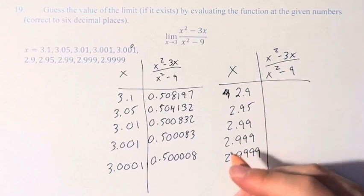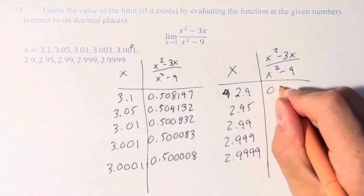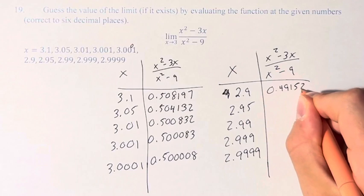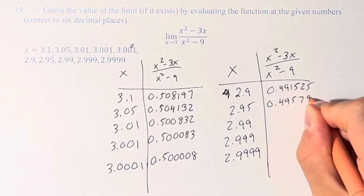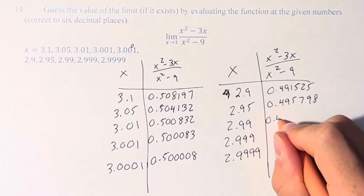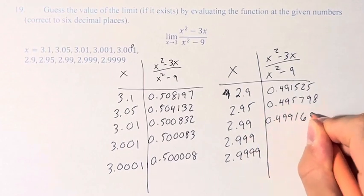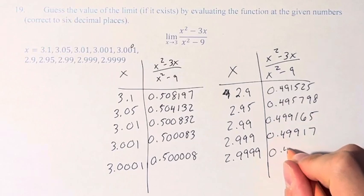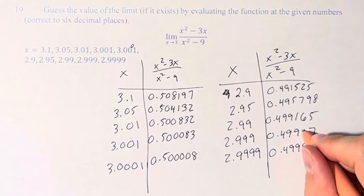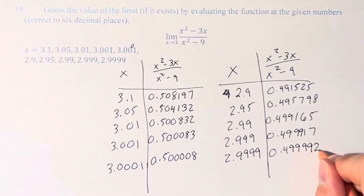And evaluating as follows, again by plugging into a calculator, we get 0.491525, 0.495798, 0.499165, 0.49917, and 0.499992.